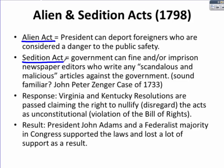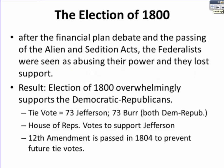Virginia and Kentucky both passed resolutions at the state level claiming the right to nullify — that is, to disregard — the acts as unconstitutional, meaning a violation of the Bill of Rights. When President John Adams and the Federalist majority in Congress continued to support the laws despite popular opposition, they lost a lot of support. The election of 1800 is actually known as the Revolution of 1800 — not because of any violence, but because the Democratic Republicans resoundingly took control of the government as the Federalists were seen as abusing their power.